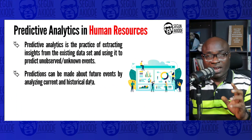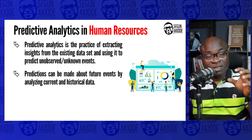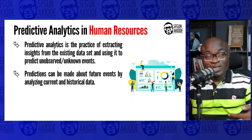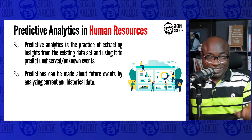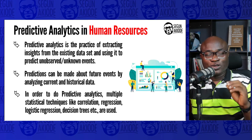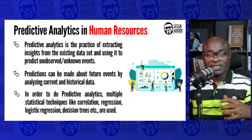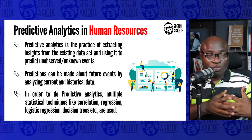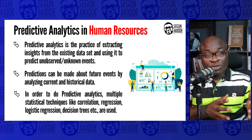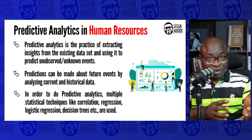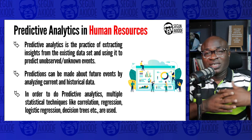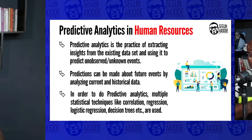Predictions can be made about future events by analyzing current and historical data. Historical data is usually described using descriptive analytics. To do predictive analytics, you need multiple statistical techniques — a combination such as correlation, regression, logistic regression, decision trees, and many others.